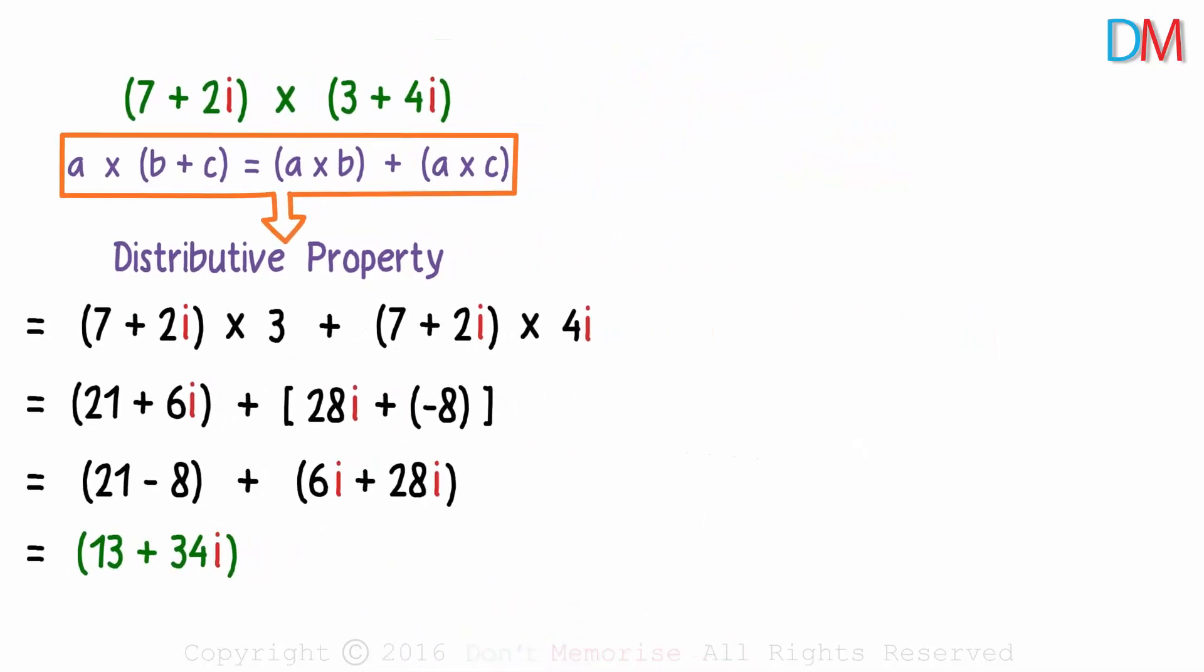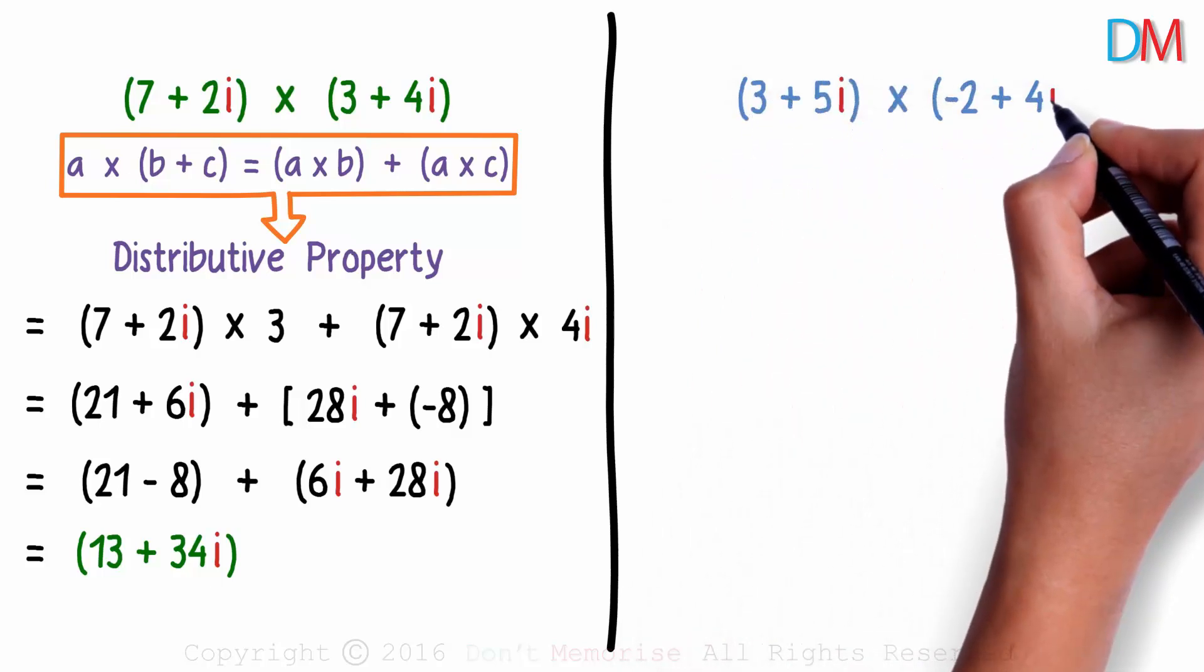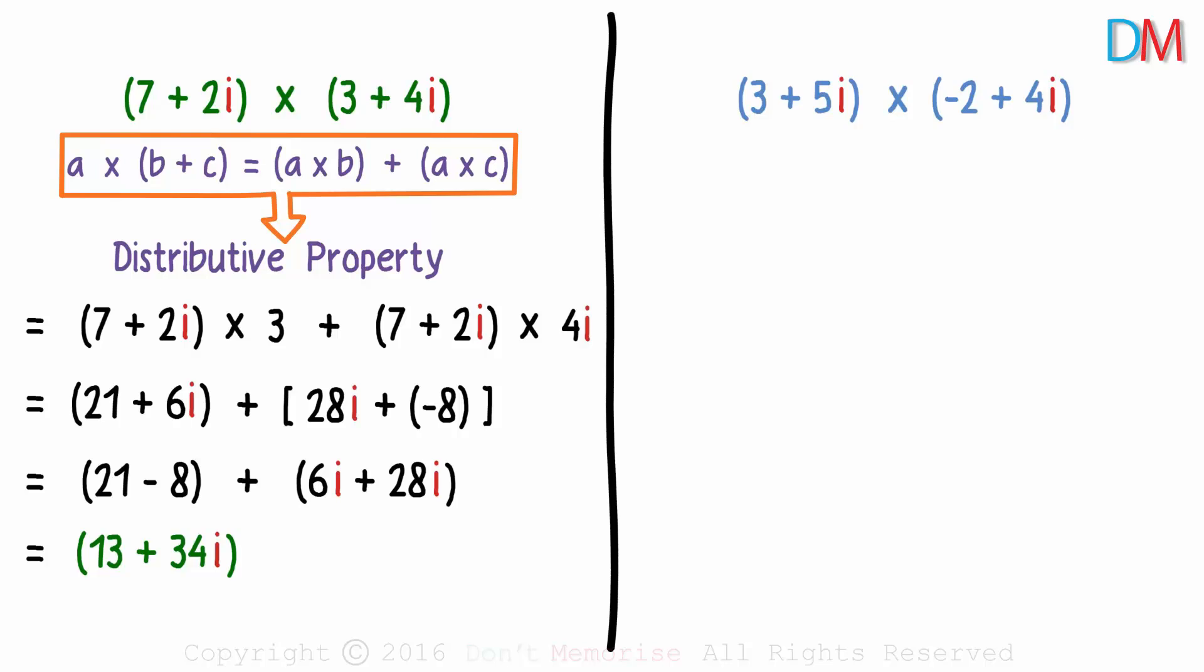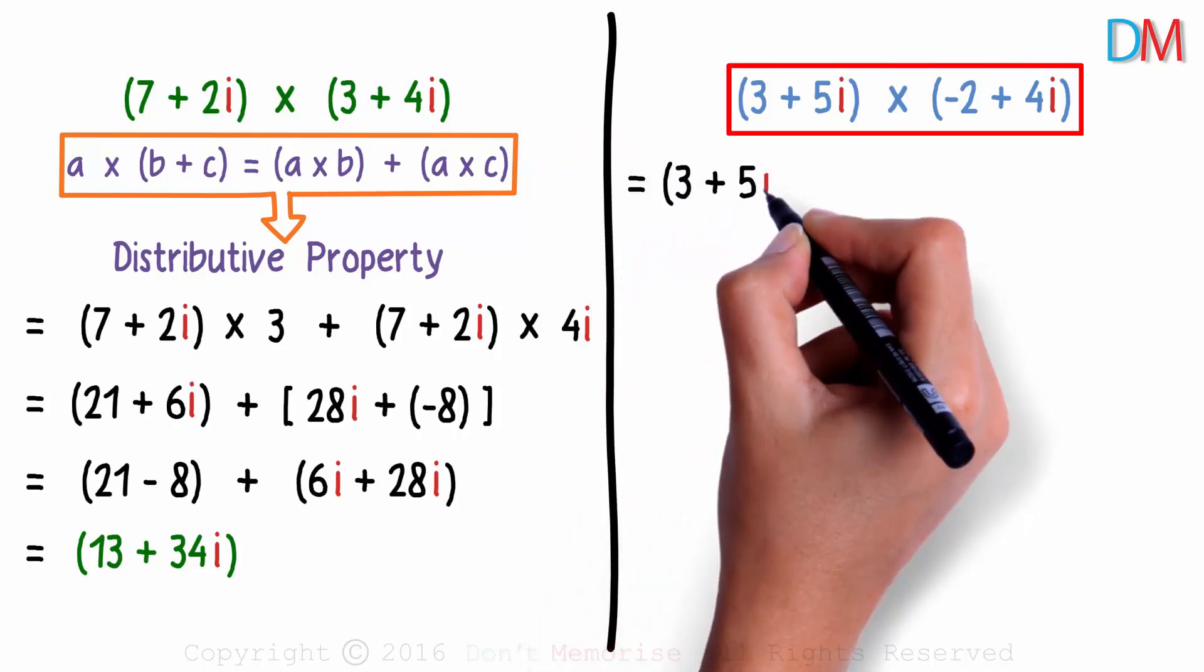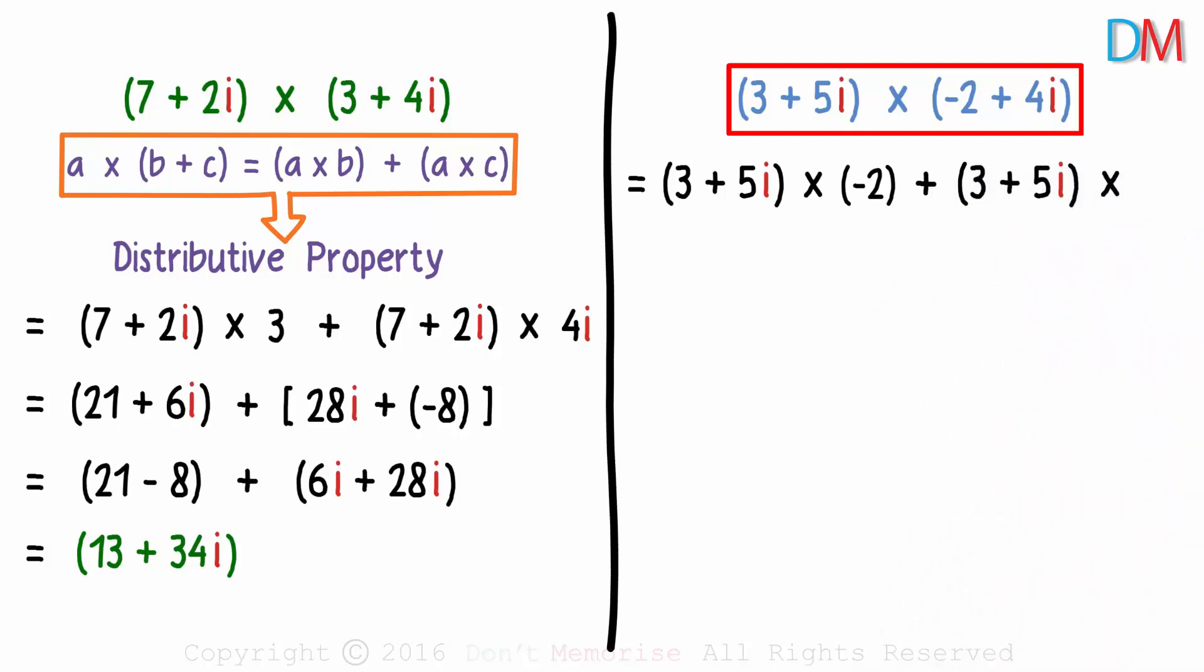Let us pick up two more complex numbers, 3 plus 5i and negative 2 plus 4i, and work out their multiplication. Would you like to try it first? We can use the distributive property here to write this as 3 plus 5i times negative 2 plus 3 plus 5i times 4i.